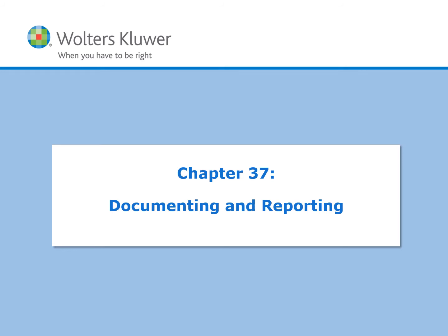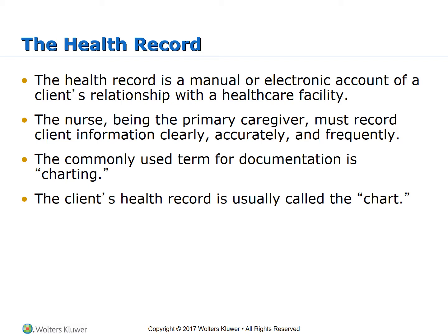We're going to first talk about the health record. The health record is a manual or electronic account of a client's relationship with a healthcare facility. You record all info regarding their past and current problems. The nurse, being the primary caregiver, must record client information clearly, accurately, and frequently. The commonly used term for documentation is charting — the information we as nurses put into the record chart facilitates the continuity of care.